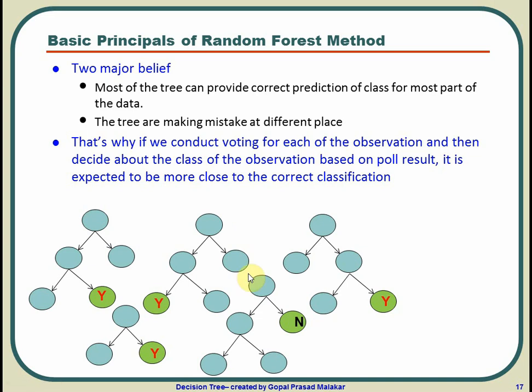Why? Because what you think is that probably this tree is making a mistake because most of the trees are correct at most part of the data and the trees are making mistakes at different places. So in your view, this tree is probably making a mistake with this particular observation and all other trees are not making mistakes. And that's why if you go by the poll method, you will say the correct class for this particular observation should be y. The correct prediction of this particular observation should be y.